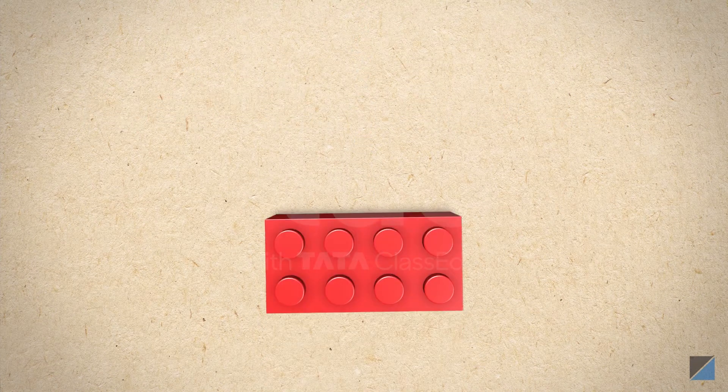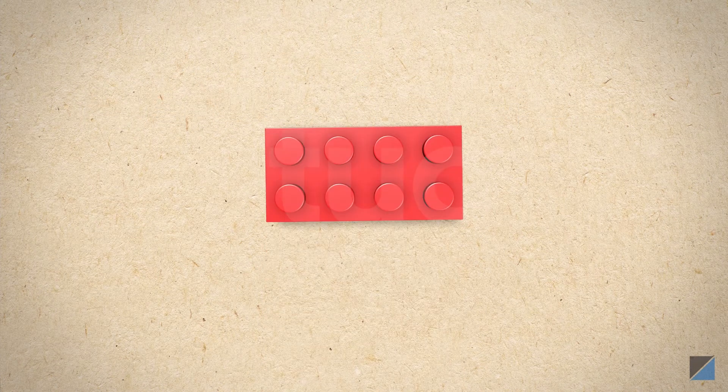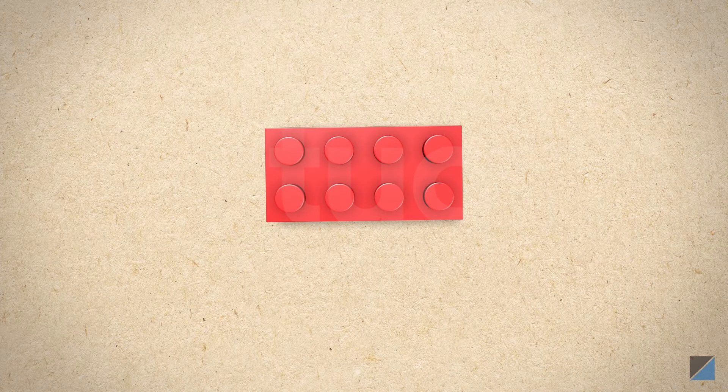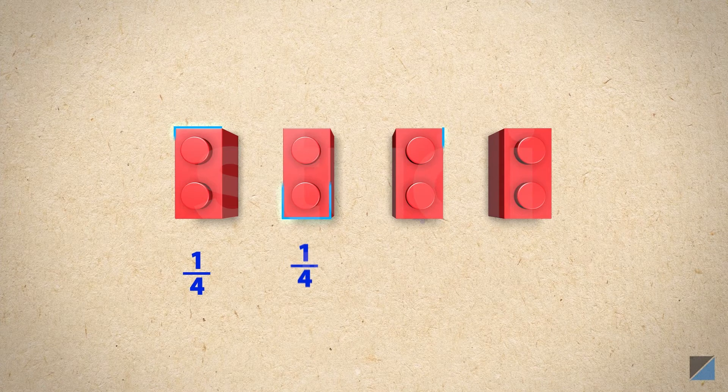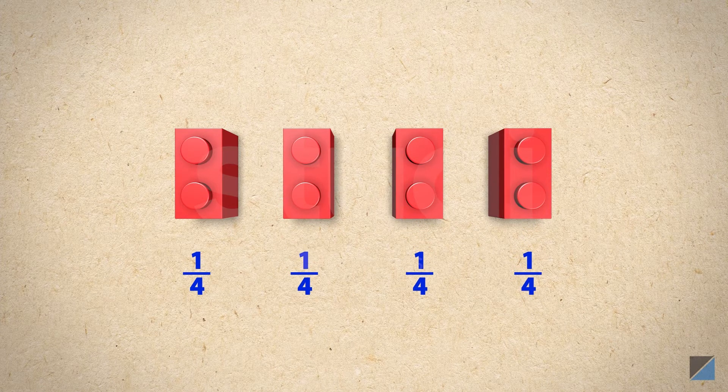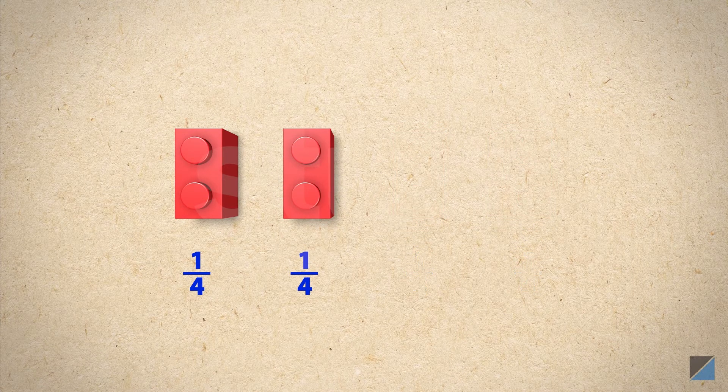To understand improper fractions, let's look at this block. This is one whole block. If we break it into four parts, then this part is one fourth. If we have two such parts, then we call them two fourths.